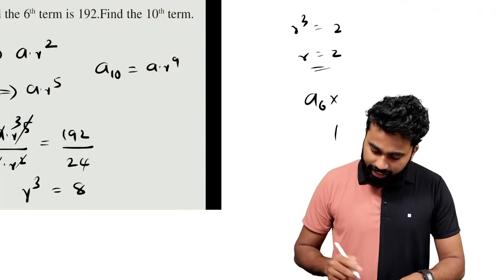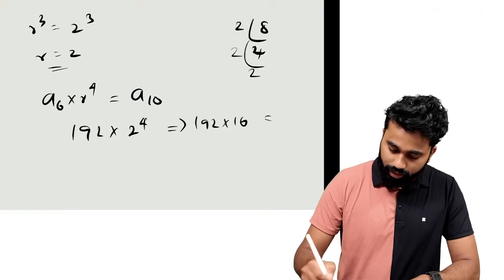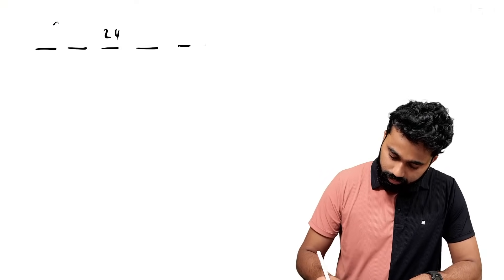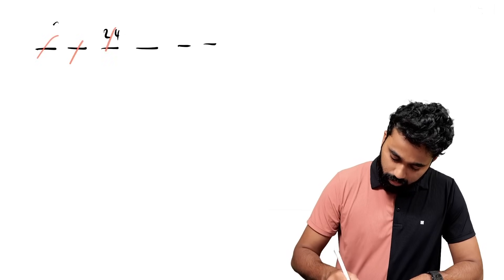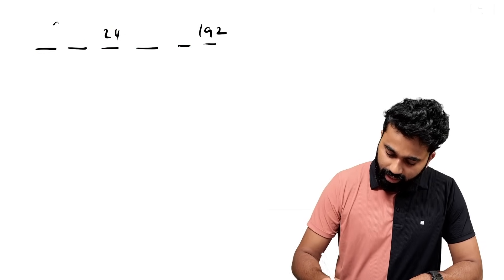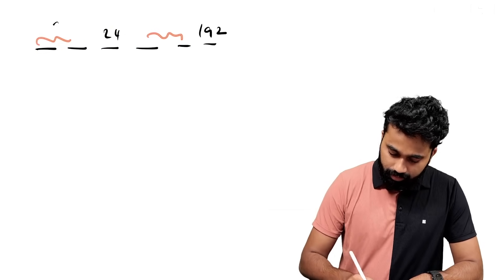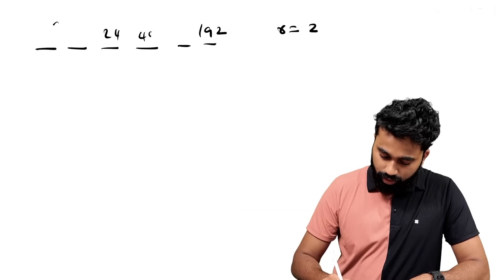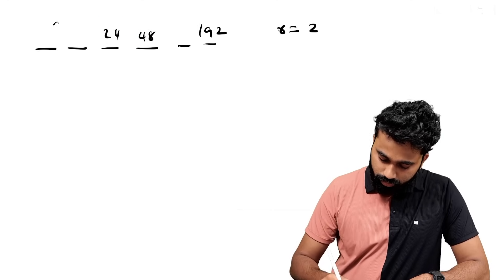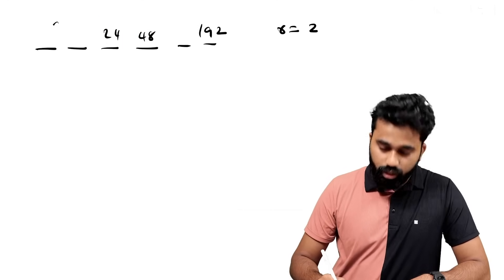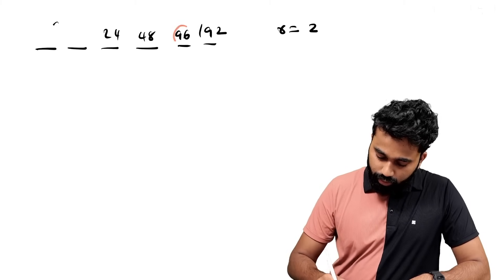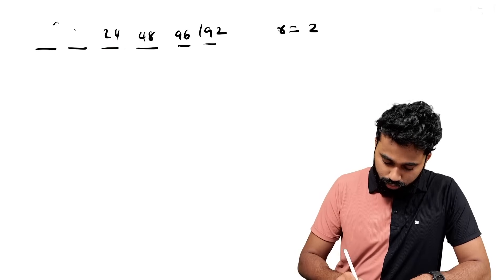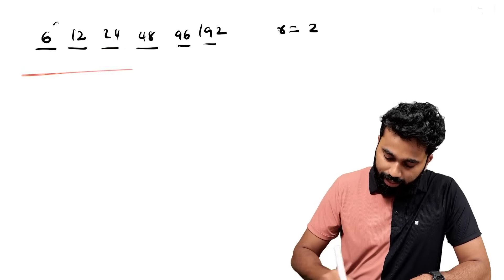If you want to write a3 and a6 — the same question. a3 is 24, a6 is 192. What are these two terms? The common ratio is 2. Now, 24 into 2 is equal to 48. 48 into 2 is 96. 24 divided by 2 is 12. That is 6. This is a pattern.